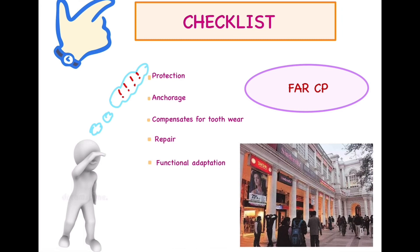R stands for repair — cementum compensates for continuous attrition so that occlusal harmony can be maintained. C stands for compensating for tooth wear — again the same principle of maintaining occlusal harmony. P stands for protection — cementum is protecting the sensitive radicular dentine by furnishing a protective casing.